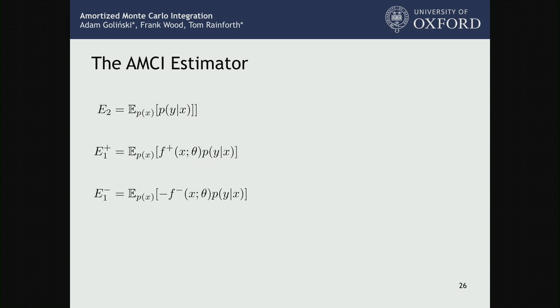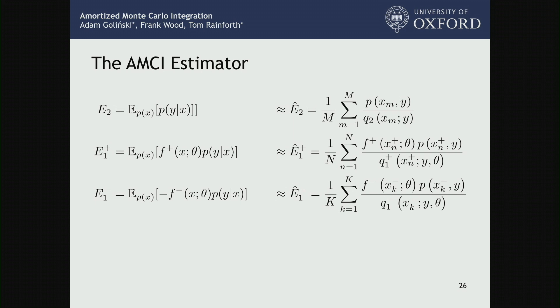Each of these expectations involves a function that's strictly positive — the likelihood is positive by definition, and f plus and f minus we've constructed to also be positive. So these are individually things we can do perfectly. We can construct importance sampling estimators that, if we have good enough proposals, will be perfect for each of these. We introduce a Q2 tailored to the normalizing constant, a Q1 plus tailored to the positive truncation expectation, and a Q1 minus tailored to the negative truncation expectation. Each can be tailored to its individual problem. By having a separate set of samples for each, we've broken that barrier.